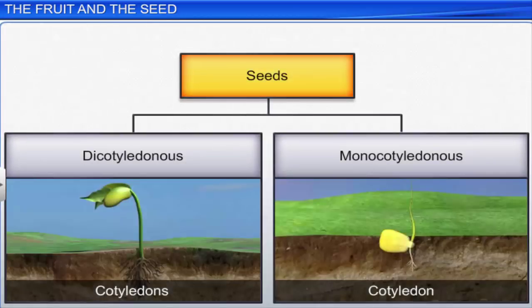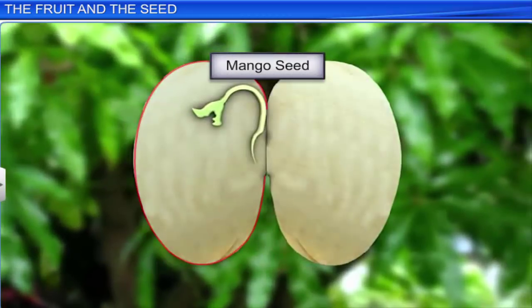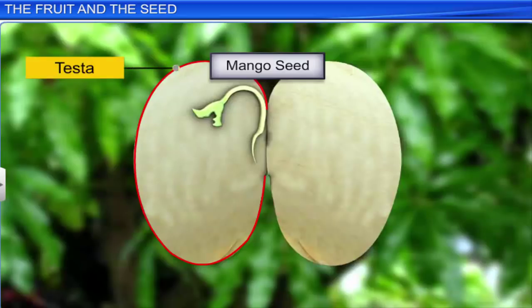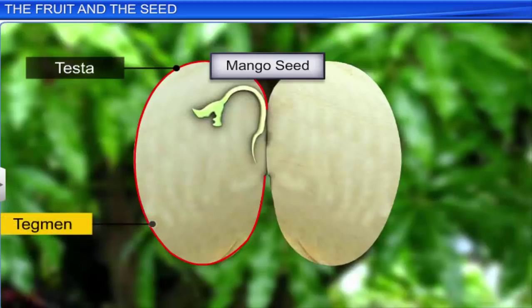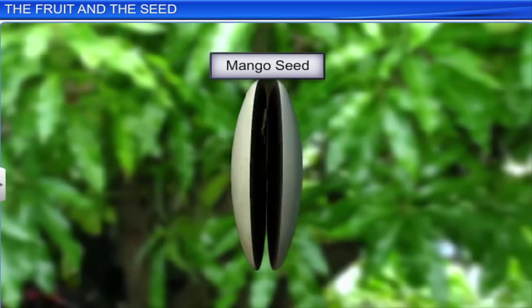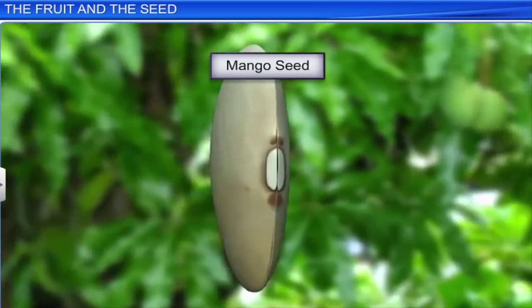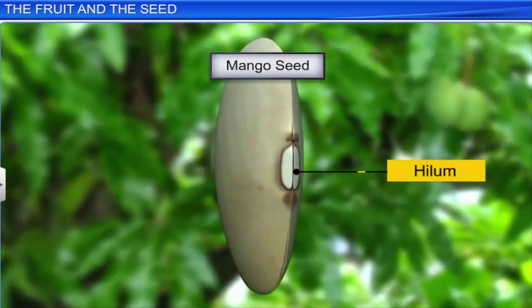A seed with two cotyledons is called dicotyledonous, and with a single cotyledon is called monocotyledonous. In a dicotyledonous seed, the outermost covering is the seed coat, made up of two layers: the outer testa and the inner tegmen. The seed coat also has a scar on its surface called the hilum, which helps attach the seed to the fruit.